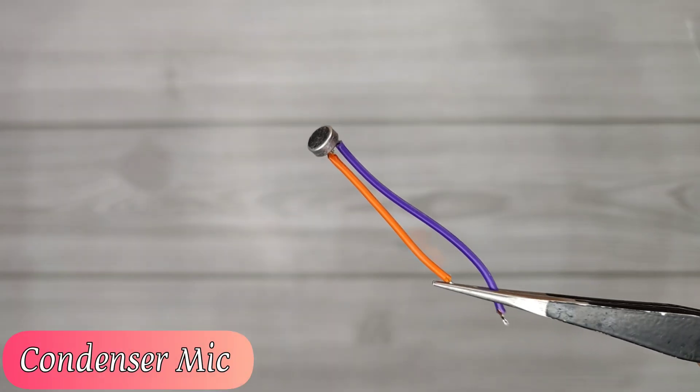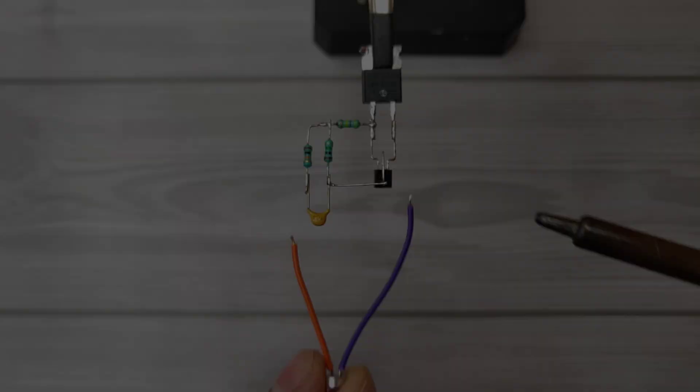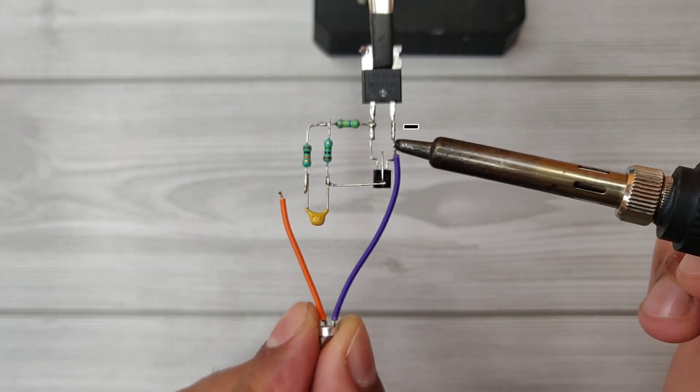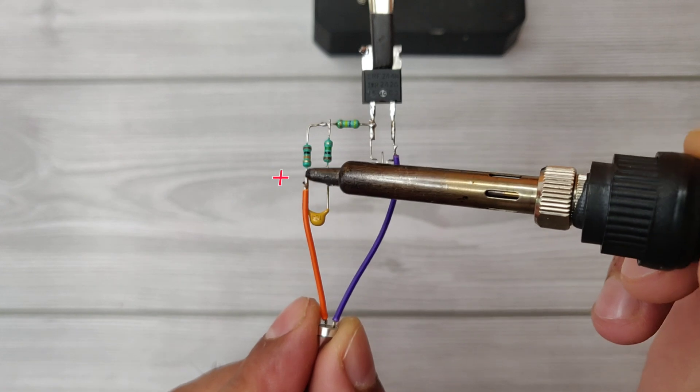Use condenser mic, also available in earphones. Solder mic negative on MOSFET source and positive on capacitor.